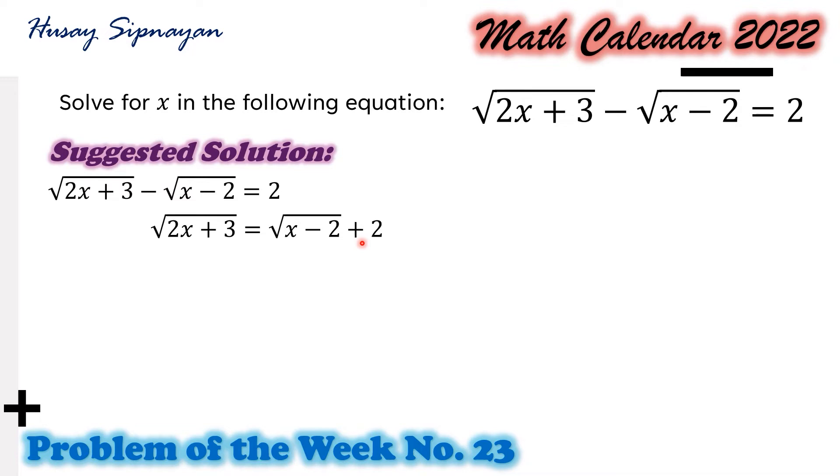We square both sides. The square root of x minus 2 equals the square root of 2x plus 3. On the left hand side, on the right hand side we apply the square of a binomial, so we have x minus 2 plus 4 square root of x minus 2 plus 4.